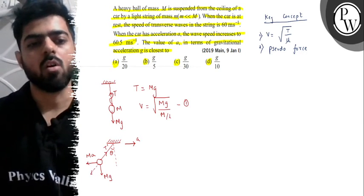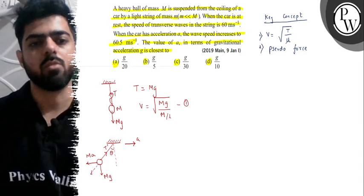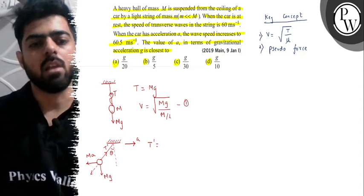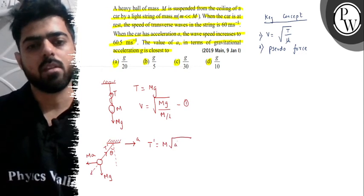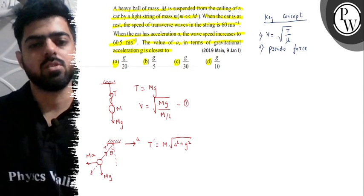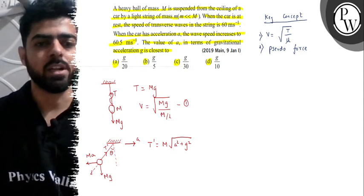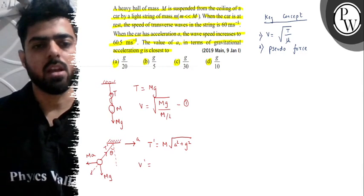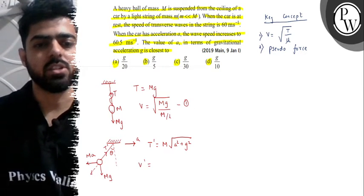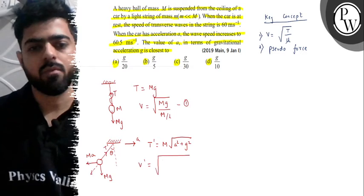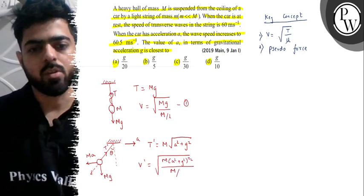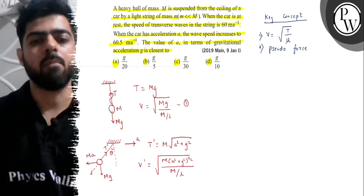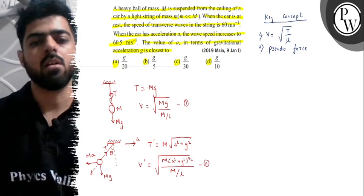So we can say T-dash, which we have to get value of in this case, will be M under root of a-square plus g-square. Here we can say velocity value in this case will become V-dash, and it will be under root of M times a-square plus g-square raised to 1 by 2, divided by again mass per unit length, M by L. We can say equation number 2.